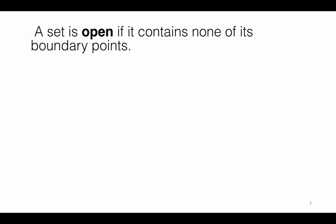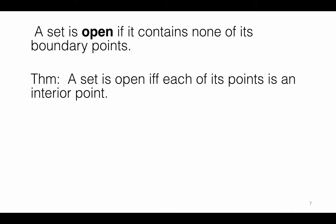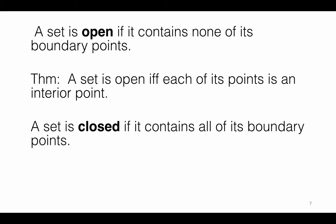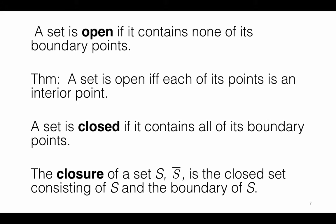A set is called open if it contains none of its boundary points. A set is open if and only if each of its points is an interior point — meaning for every point in the set, you can find an epsilon neighborhood around that point contained inside the set. A set is closed if it contains all of its boundary points. We define the closure of a set S, written S-bar, as the closed set consisting of S and the boundary of S. If S is already closed, then the closure of S is S itself.